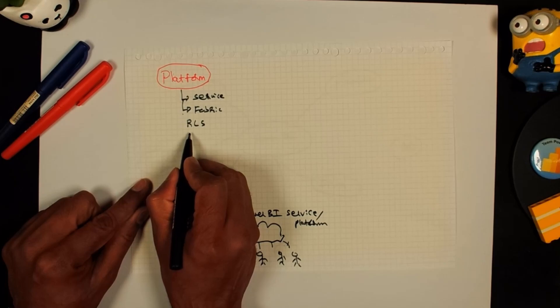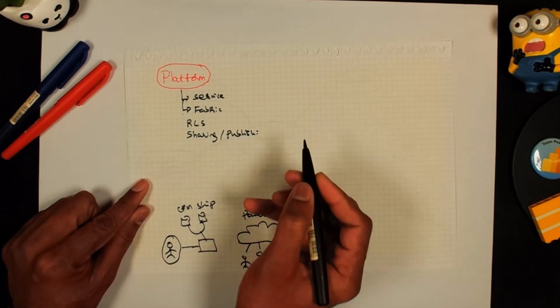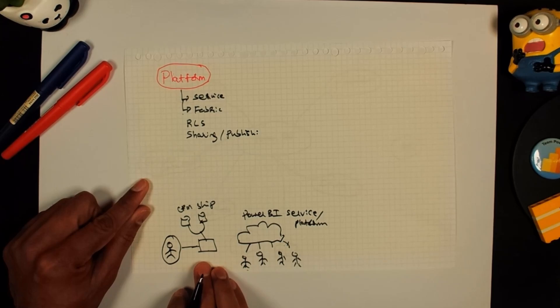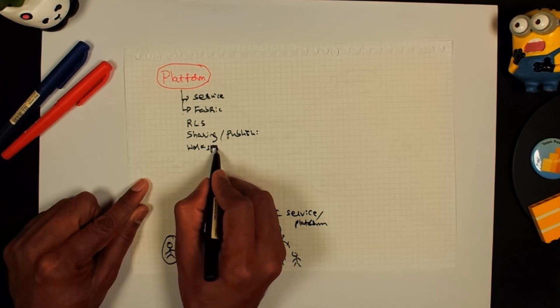Then another word that you hear is sharing, publishing. This is when whatever you have created, you're publishing. So that means you're pushing it to the service. And then if you're sharing, you're basically giving others in the organization access to it. And then another aspect that we hear is workspaces.